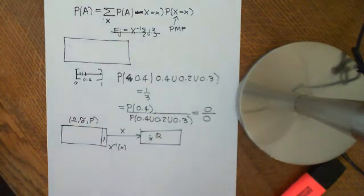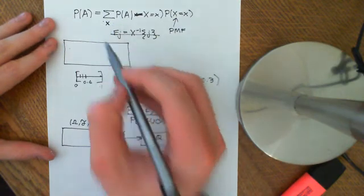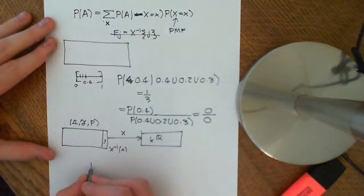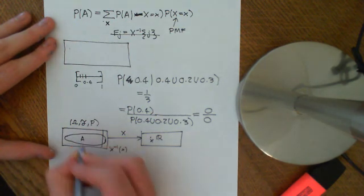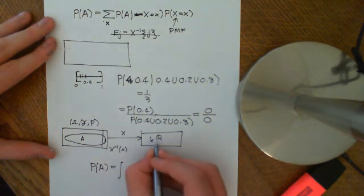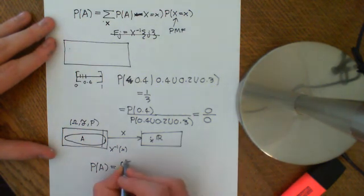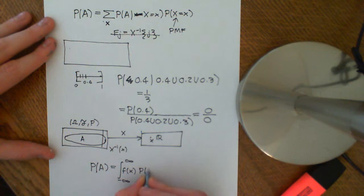So it causes us a problem over here. So what we have to do is replace it by the PDF, and then we have to replace this sum by an integral. So basically, the probability of an event A over here, the law of total probability becomes equal to the integral over all possible values that x can take. So let's say negative infinity to infinity of the PDF of f, so little f of x, times the probability that A happens, given that x is equal to little x dx.